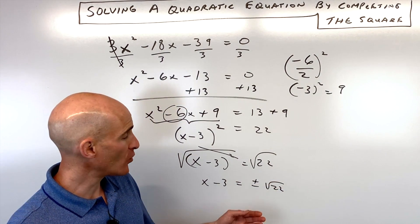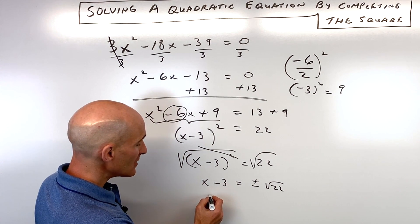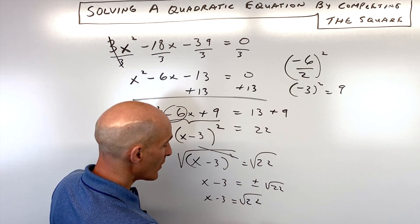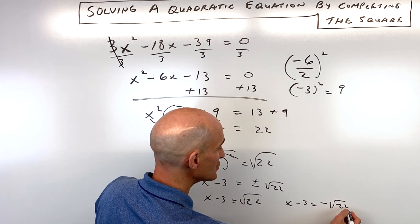Remember, when you take the square root of both sides of an equation, you're going to get two solutions, plus or minus. Then what I'm going to do is, one way to think about this is to write this in two different equations: x minus 3 equals positive root 22, x minus 3 equals negative root 22.